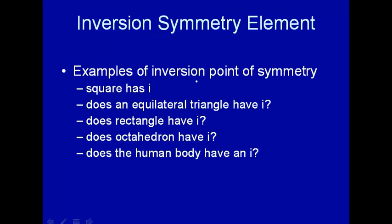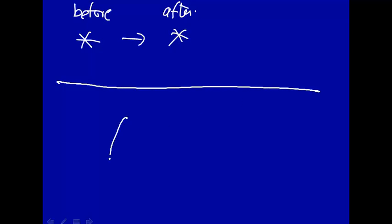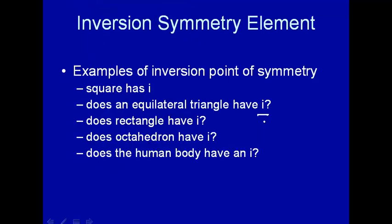Now let's go to inversion point of symmetry — here we're talking about a point. Let's use a square to illustrate what we mean by inversion center. A square has a center of inversion right in the middle. If you take any point in the structure, say a corner, and go toward the center, and then keep going the same distance in the same direction, you'll land on another corner. Any point inverted through this center gives you the square back again. So a square has an inversion symmetry element, and an inversion is a point.